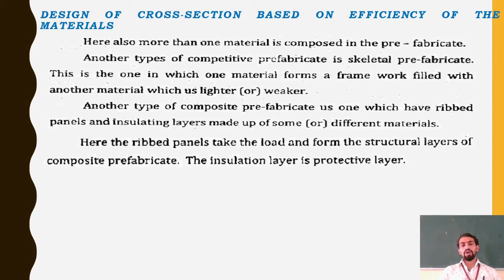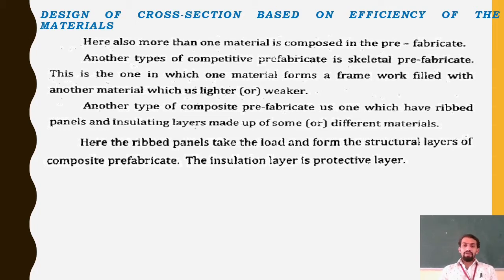In some composite prefabricates, more than one material is combined where one material forms a formwork or framework filled with another material that is lighter or weaker. Another type of composite prefabricate has ribbed panels with insulating layers made of different materials. The ribbed panels take the load and form the structural layers, while the insulation layer serves as a protective layer for the internal material.